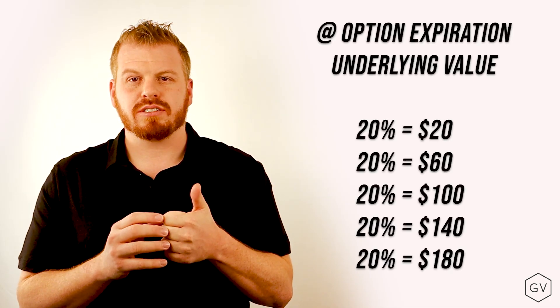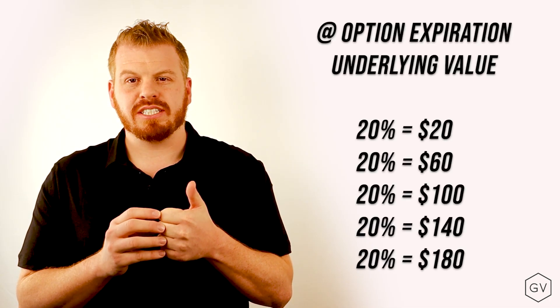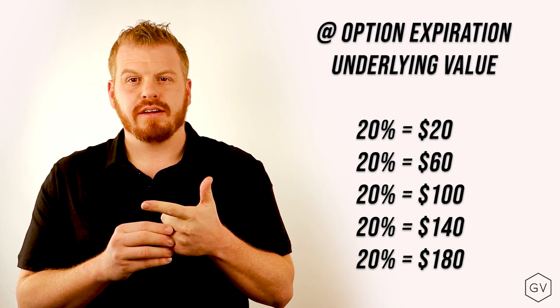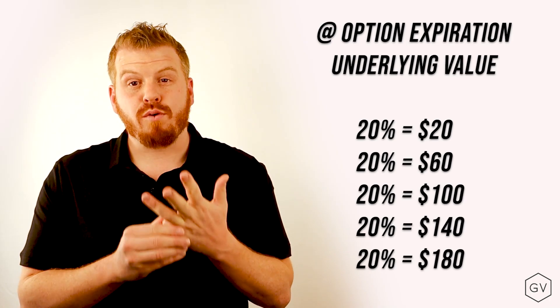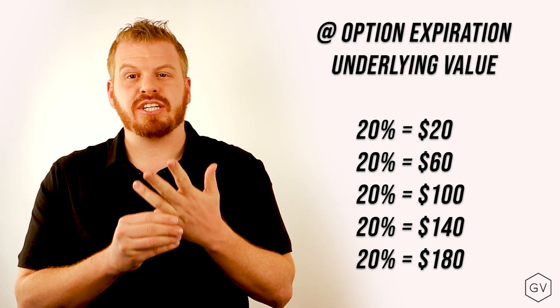Now let's increase volatility and see how that impacts the expected value of this theoretical call option. Let's say at expiration, the underlying has five different potential values. It has a 20% chance of being worth $20, a 20% chance of being worth $60, 20% chance of $100, 20% chance of $140, and 20% chance of $180.